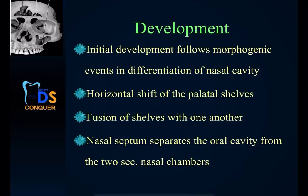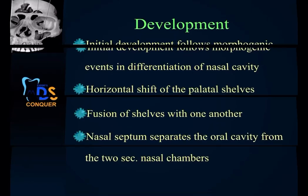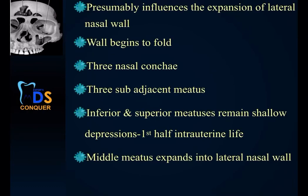Coming to the development — the exact sequence is important. It follows morphogenic events in the differentiation of the nasal cavity. Later, horizontal shift of the palatal shelves occurs, followed by the fusion of cells with one another. Then the nasal septum separates the oral cavity from the two sections of the nasal chambers, and it presumably influences the expansion of the lateral nasal wall. The wall begins to fold, following which the prenasal concave and the prenasal or sub-adjacent meatus are formed.